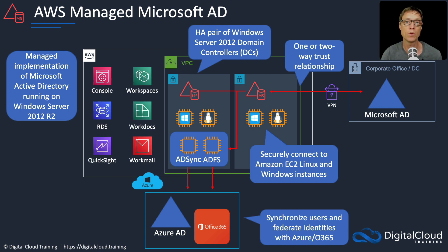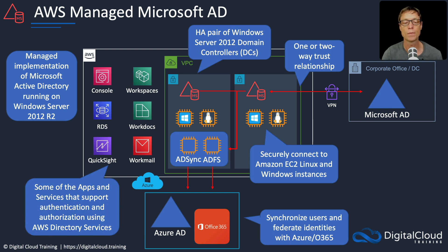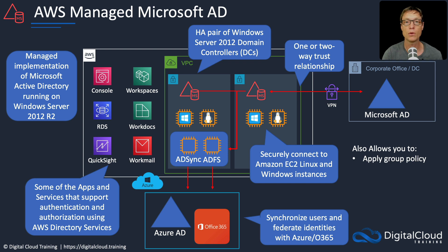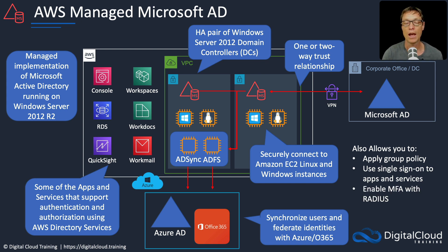There are also quite a few applications and services from AWS that support authentication and authorization using the AWS managed Microsoft AD. In the hands-on we'll see how we can use Amazon Workspaces to authenticate to the managed Microsoft AD and then access the AWS management console. AWS managed Microsoft AD also supports group policies, single sign-on to many apps and services, and multi-factor authentication using RADIUS.